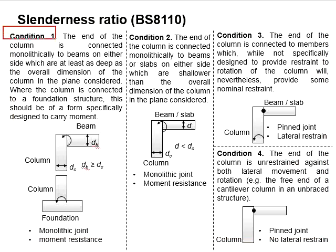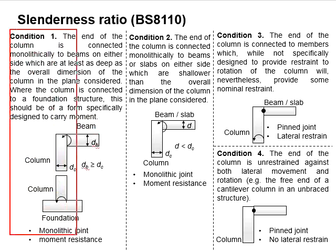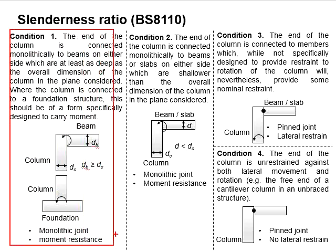Condition 1 refers to the monolithic joint which is moment resistance with the beam depth at least greater than the width of the column. It can be used on the connection between beam and column and also the column and foundation. It represents a good rigid condition of the joint.